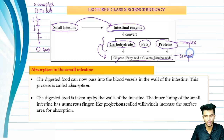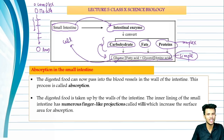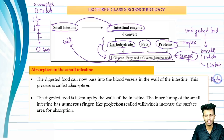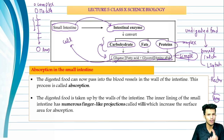Now these simple foods need to reach the body's cells, because food is used by cells to generate energy. The undigested food that was not broken down — where does it go? The digested simple food needs to be absorbed into the body. So how does the body absorb it? How does it reach the cells?